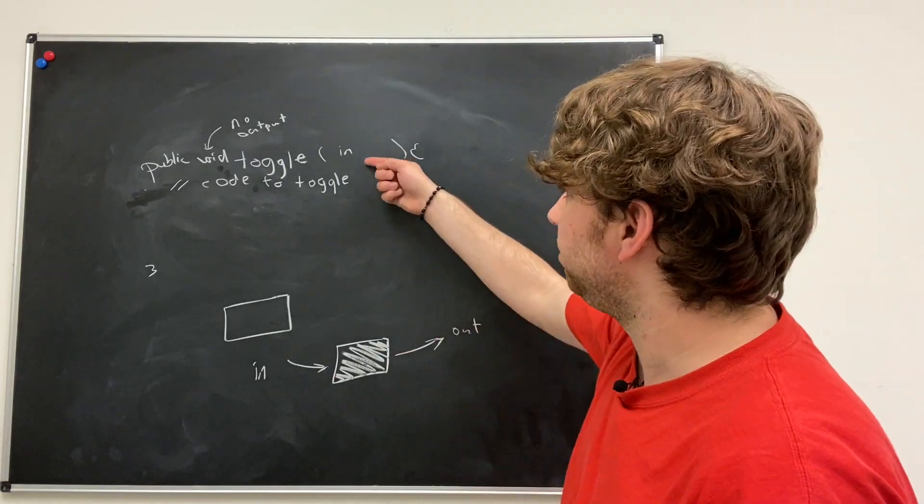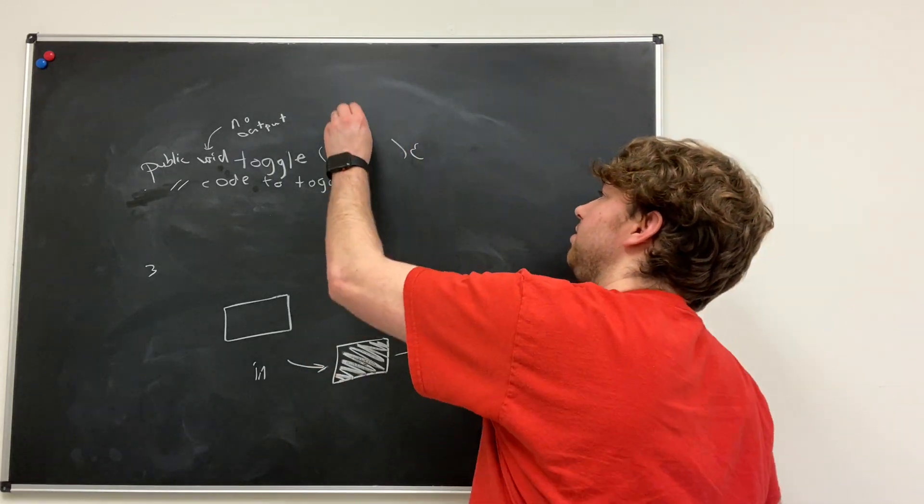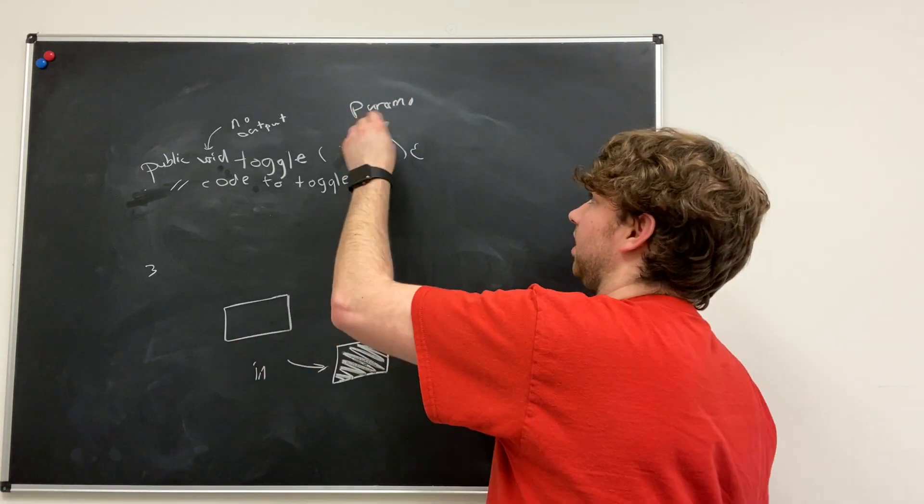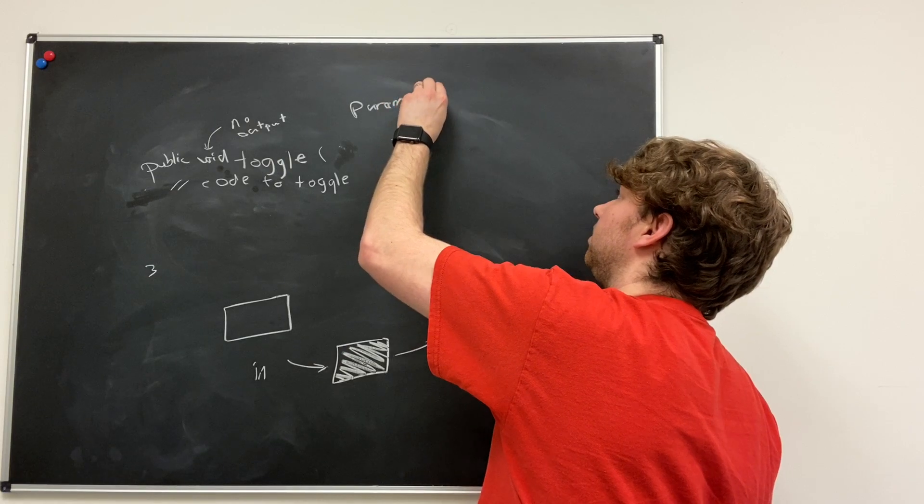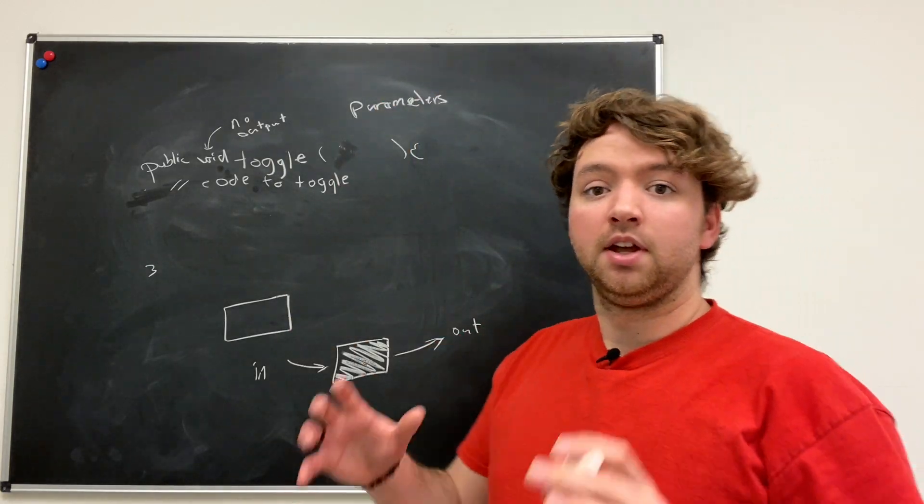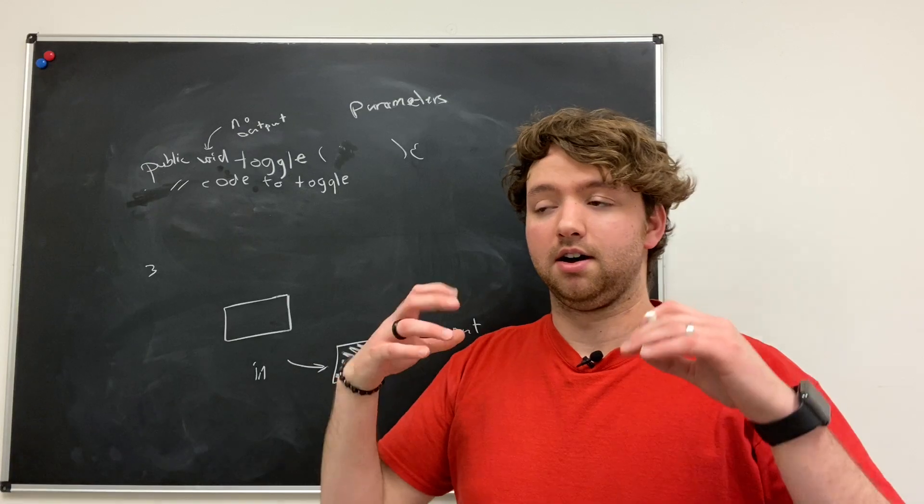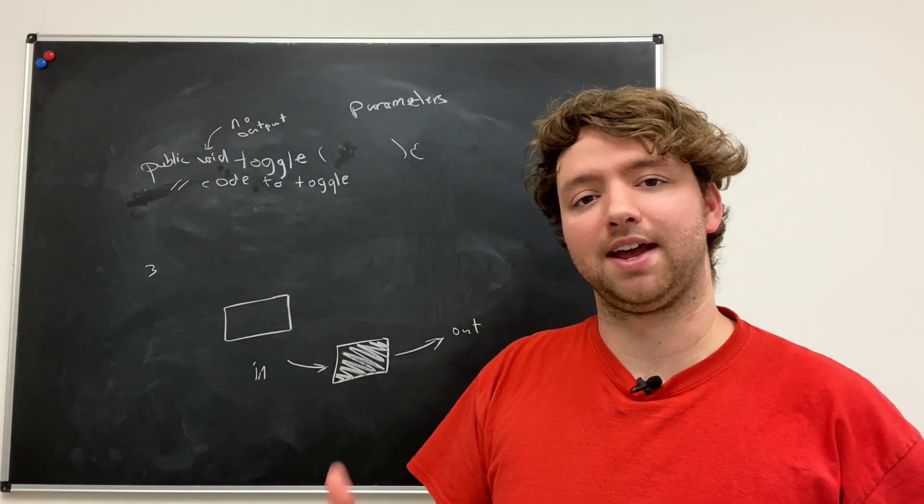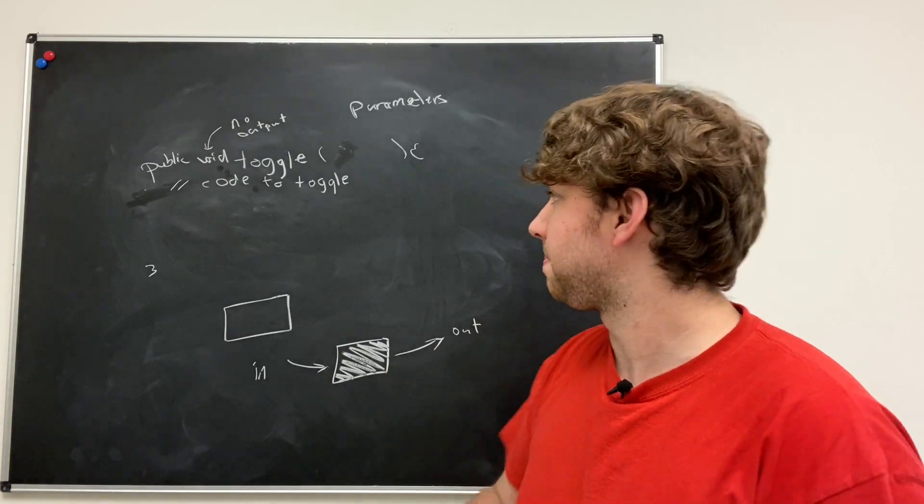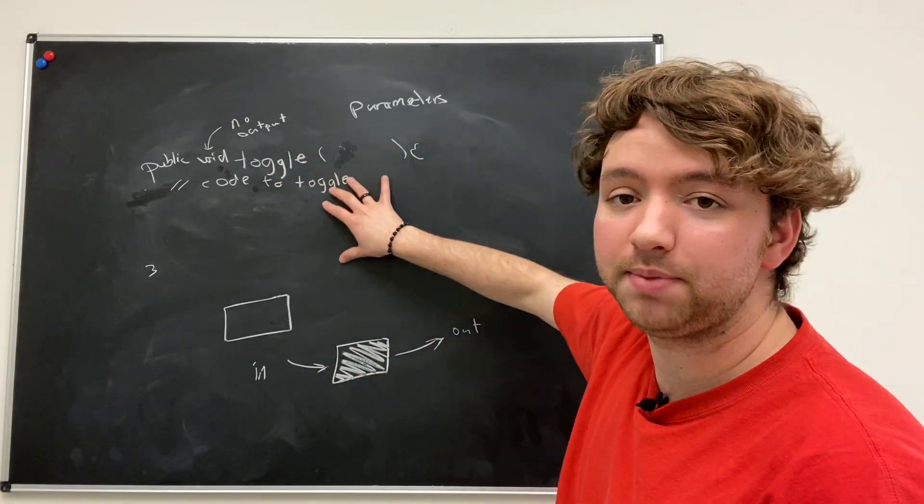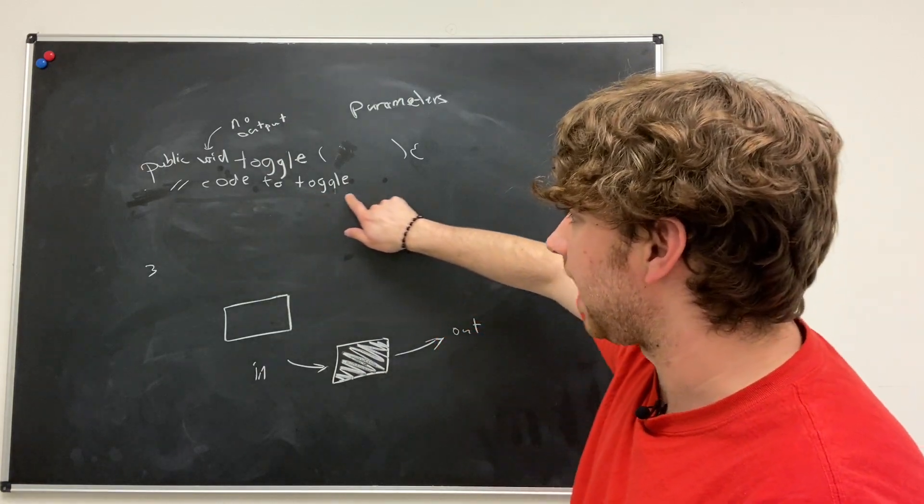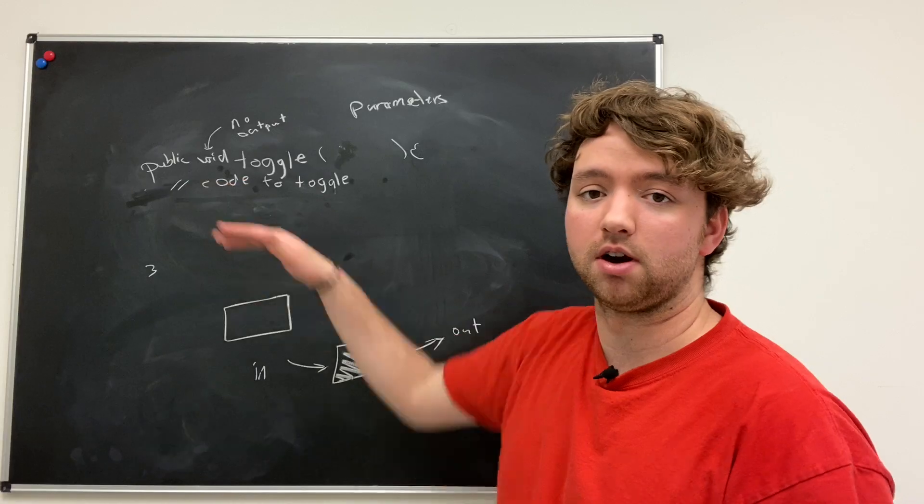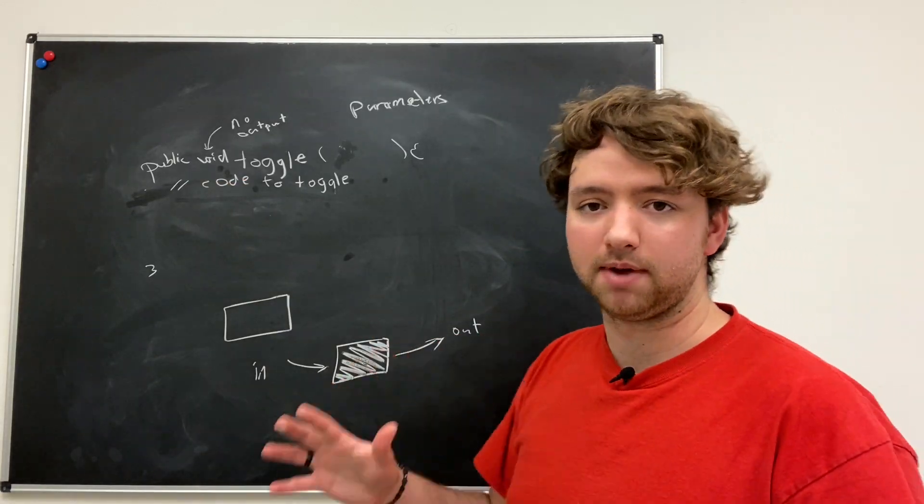The input here is what's known as parameters. We're going to talk a little bit more about parameters in the context of event handling in the next episode, and in the following episode we're going to get hands-on with event handling. You got the basics of methods now, you just got to figure out the code to actually toggle, which we'll be talking about later in the series.